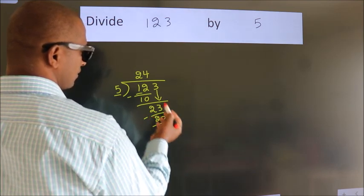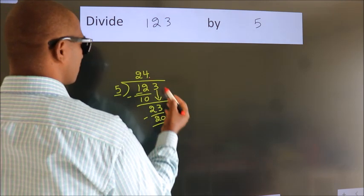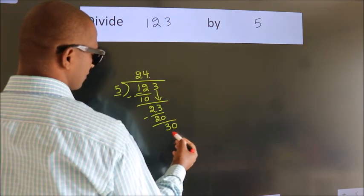After this, no more numbers to bring down. So what we do is put a dot and take 0, making 30.